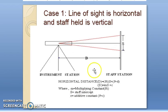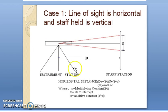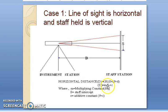Discussing Case 1 — the line of sight is horizontal and the staff held is vertical. The instrument station and staff station are both vertical and the line of sight is perfectly horizontal, so the horizontal distance uses the basic equation: D = (f/i) × s + f + c, or D = ms + c.